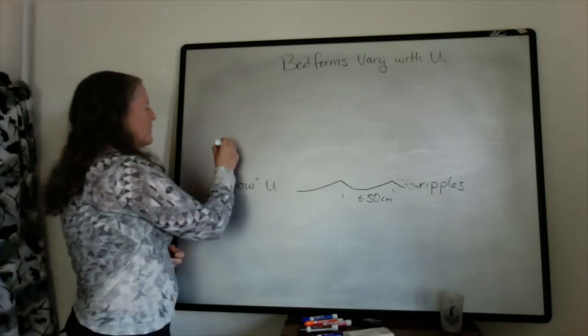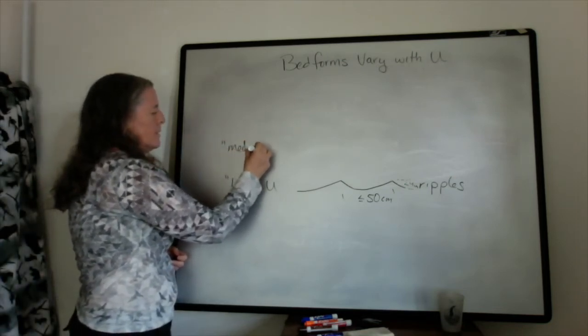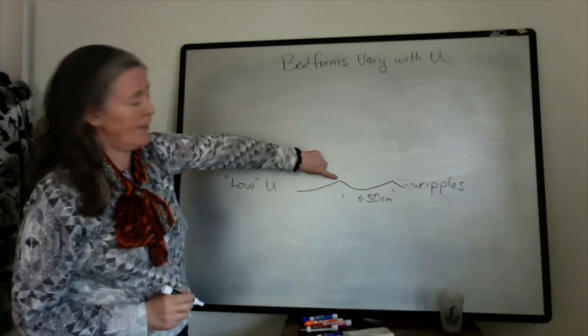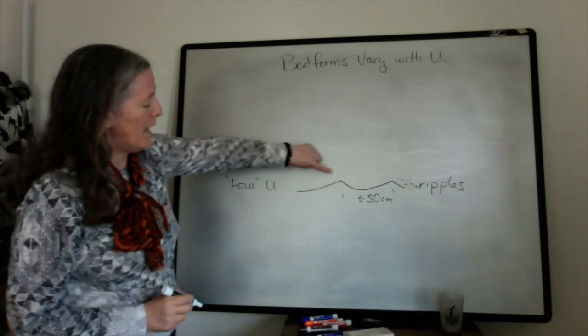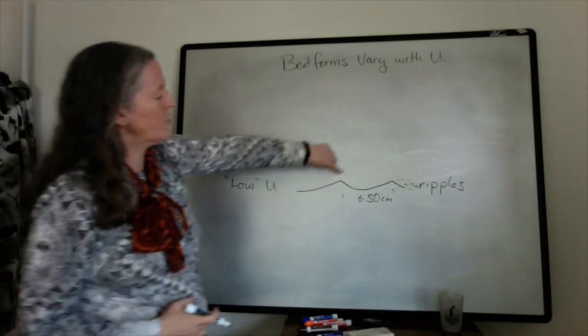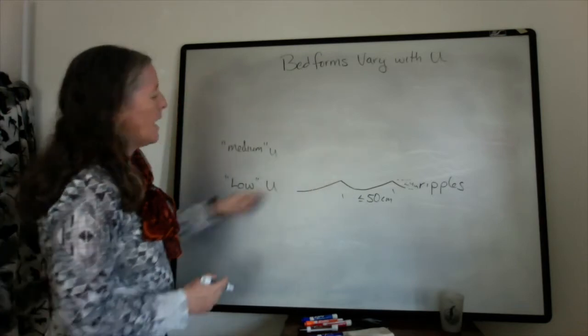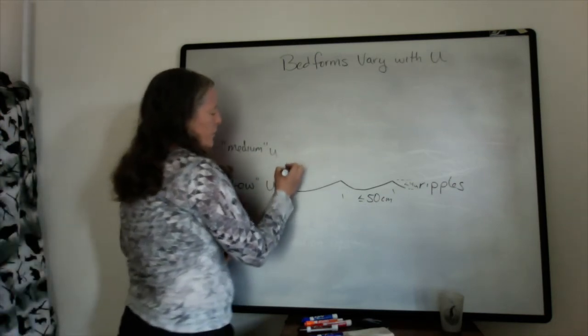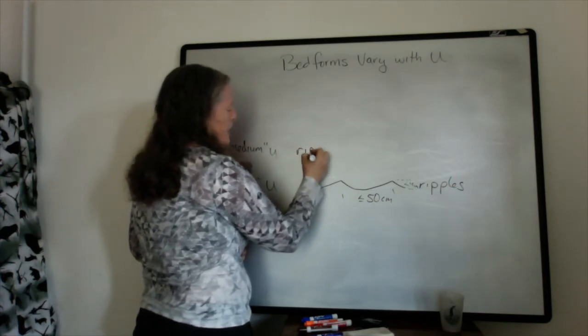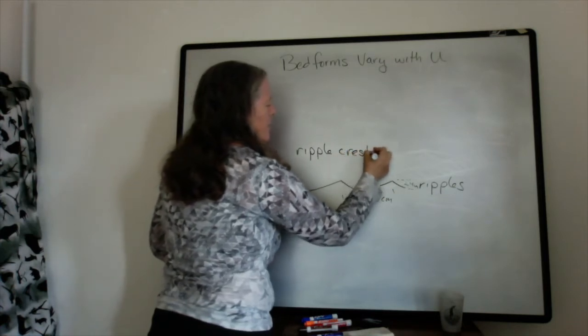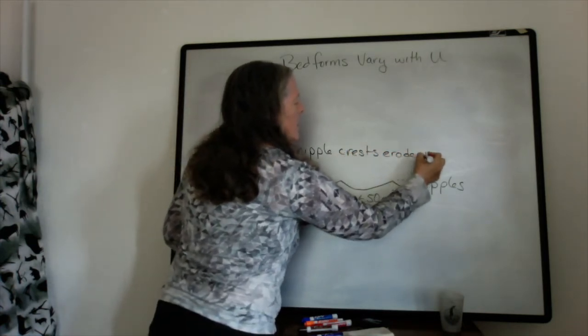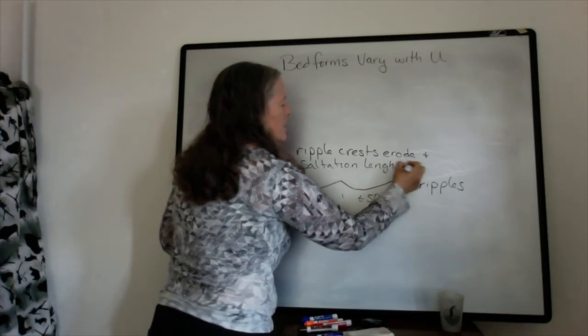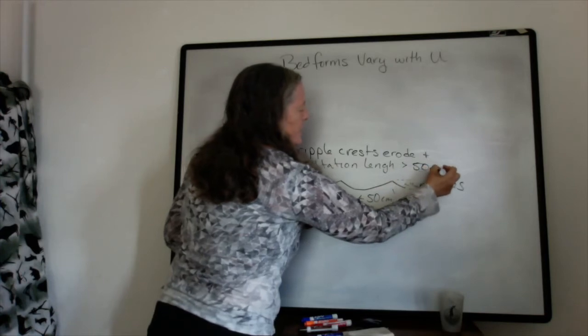So as the flow speed increases, the tops of the ripples tend to get eroded off very easily. And the distance that grains saltate gets large enough that it can be 50 centimeters or more. And so you end up with a change in the geometry. So as the flow goes up, we can say that the ripple crests erode. And the saltation length is greater than, say, 50 centimeters for many grains.